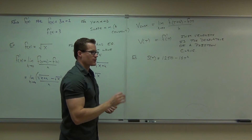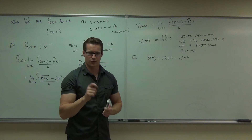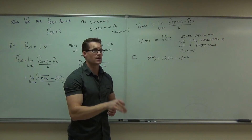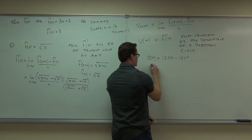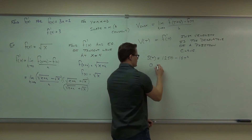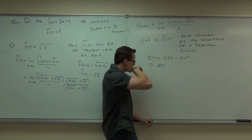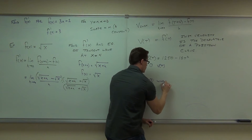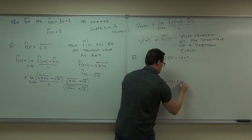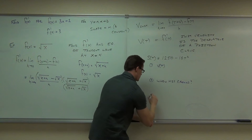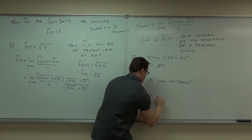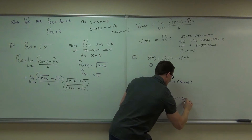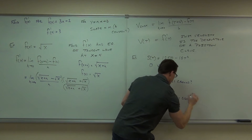I want to do three things. First, I want to find the velocity — the instantaneous velocity formula. Second, I want to find out when this hits the ground. And third, we'll find out what the velocity is when it hits the ground. It's a three-part question: find v of t, when does it hit the ground, and how fast does it hit the ground?